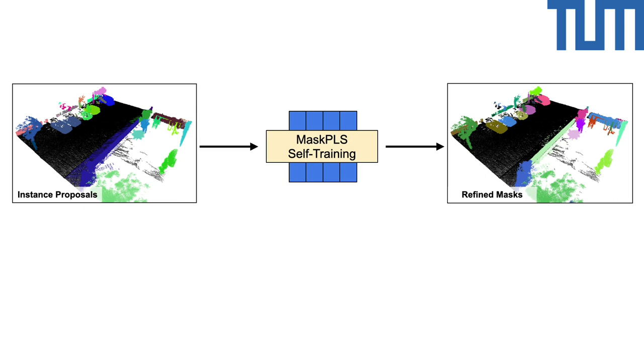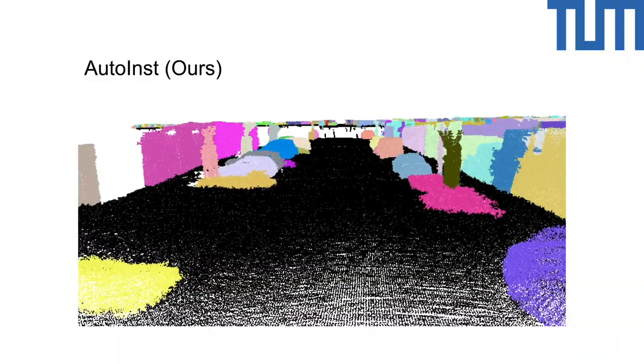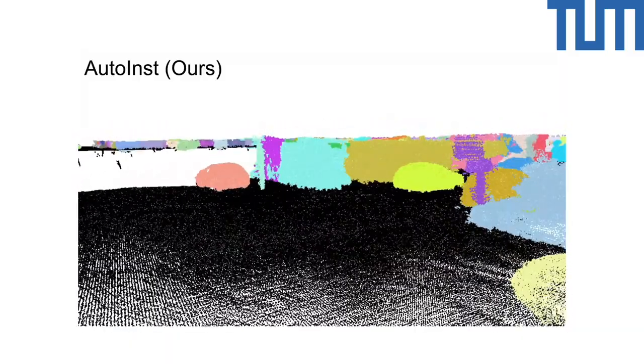We further refine these instance proposals by performing self-training. We compare our method against various baselines on instance labels of an outdoor laser 3D scan dataset. Compared to our competitors, our method obtains a cleaner set of pseudolabels, resulting in more detailed and semantically coherent instance masks.